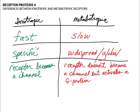Ionotropic receptors open up in a specific spot and allow a few ions to pass through to produce a very specific change in the membrane potential at that particular point. For example, if we have an ionotropic receptor out on a dendrite and a signal is sent from the presynaptic cell, when the neurotransmitter binds to that receptor, we're only going to get a little change in membrane potential out on the dendrite — possibly not even a change at the axon hillock, and therefore possibly no action potential.